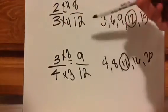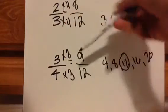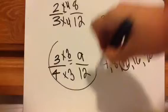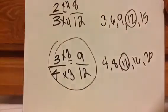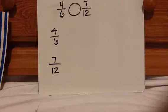So now, eight-twelfths compared to nine-twelfths — this is greater. I want you to press pause after I give directions. Find the equivalent fraction for four-sixths and seven-twelfths using the common denominator method I showed you earlier, and then figure out which one is more.